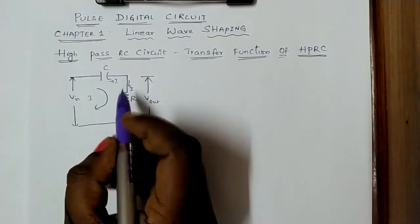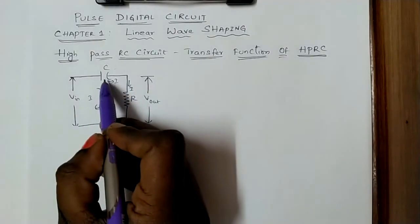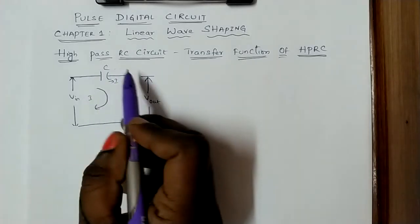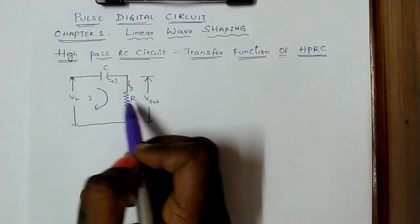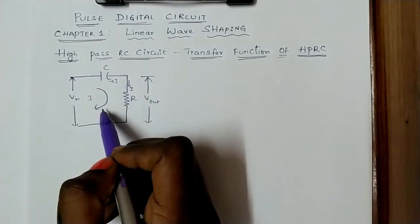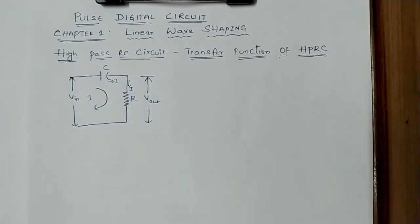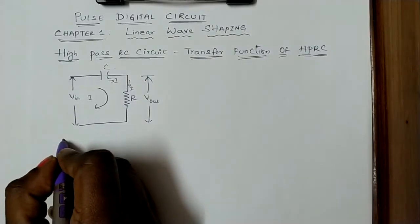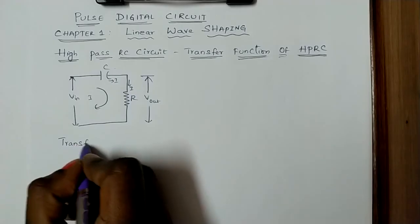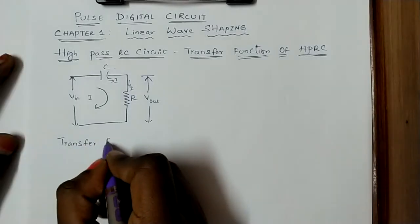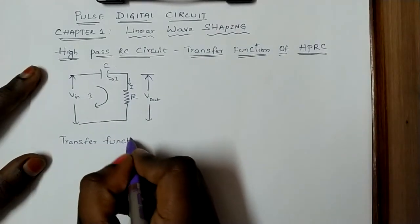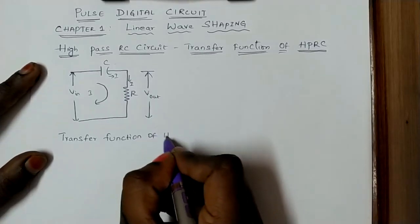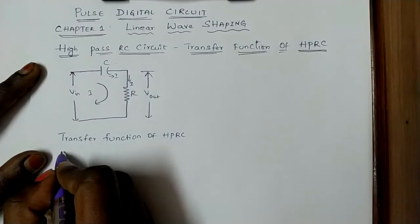This is the circuit diagram of the RC high pass circuit. Here we have two components: a capacitor and a resistor, which is why it is called an RC circuit. We are collecting the output across the resistor, which is why it becomes a high pass RC circuit.